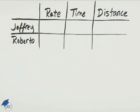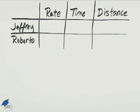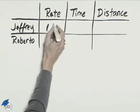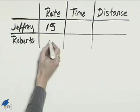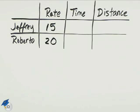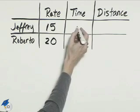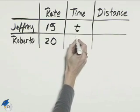For this problem, let's set up a table with the rate, the time, and the distance. We know that Jeffrey's rate is 15 miles per hour and Roberto's rate is 20 miles per hour. We don't know their time, but we know they started at the same time, so they're biking for the same amount of time. We'll call that t for both of them.